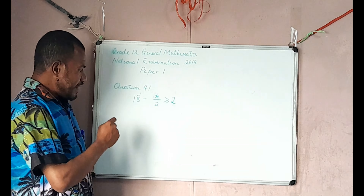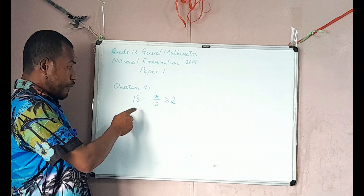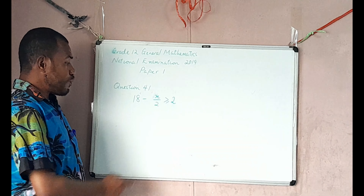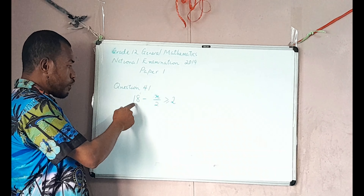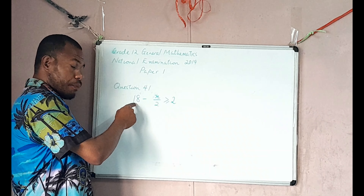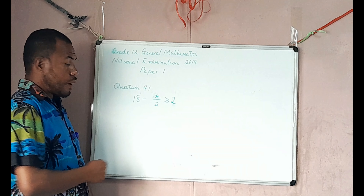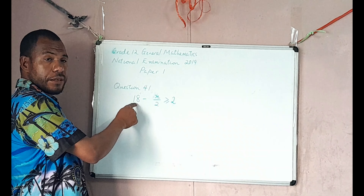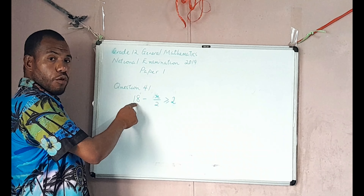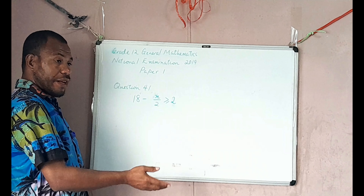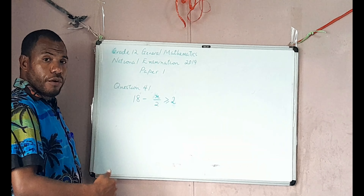To answer this question, you get rid of 18 and 2 from your left hand side and solve for x. Firstly, you get rid of 18. The only way to get rid of 18 from your left hand side is to take the opposite operation of positive 18. The opposite of positive 18 is negative 18, so you subtract 18 from your left hand side.